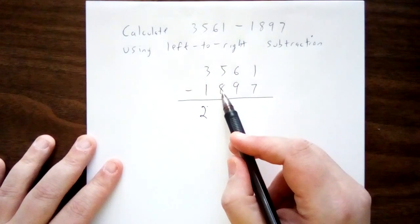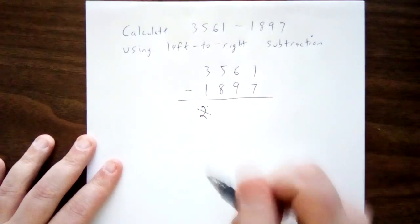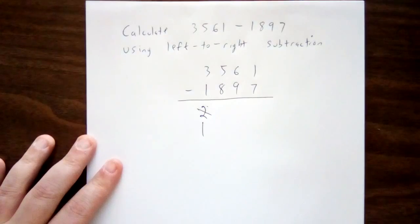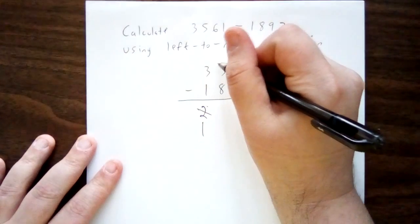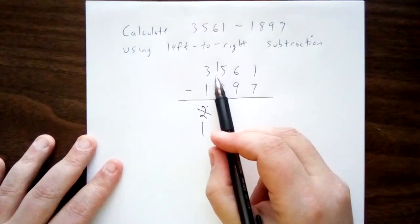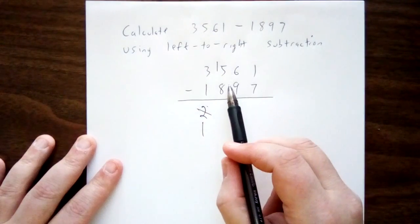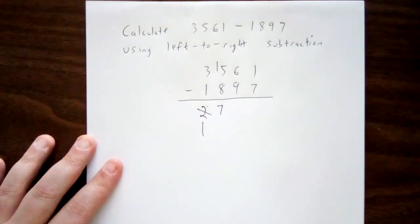500 minus 800, I can't subtract that. So I'll take the 2,000 that I have left over and reduce it by 1 to 1,000. That extra 1,000 is worth 10 hundreds, so I'll move that to the hundreds place. I now have 15 hundreds in total, and I'm removing 8 of them. That leaves 7 hundreds left over.